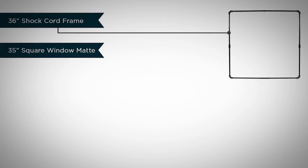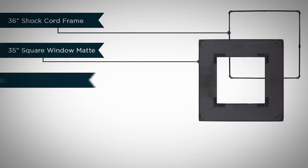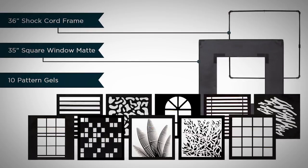A 36-inch square retractable shock cord frame, a 35-inch square window mat, and 10 different 22.5-inch square shadow pattern gels, also known as Kukuloris, or cookies.